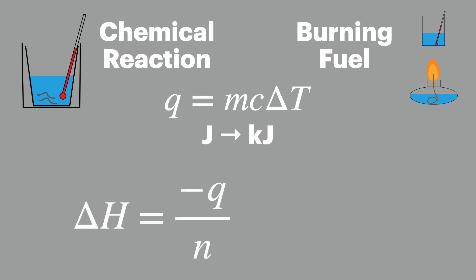Now on to the last equation. This equation turns our energy transfer into our enthalpy change. You can see here that we use the minus q in this equation. This is because so far we've measured the energy of the water or the surroundings, and what we want to do is turn that round so it's measuring the energy change in the actual chemicals.